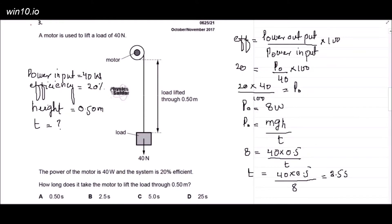This is question number three, from the October/November 2017 series. The question is: a motor is used to lift a load of 40 newtons. The power of the motor is 40 watts and the system is 20% efficient. How long does it take the motor to lift the load through 0.50 metres? You can see in the diagram there is a motor lifting the load up to 0.50 metres height.